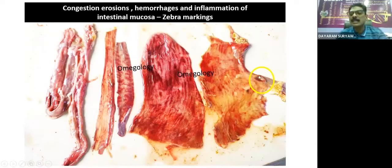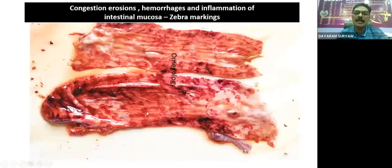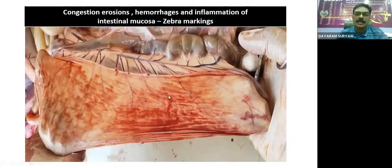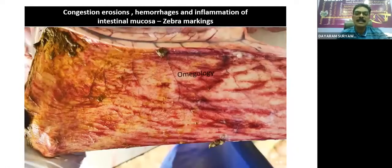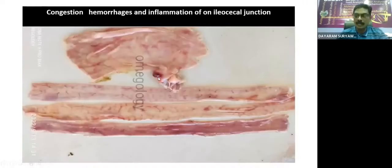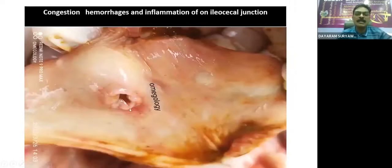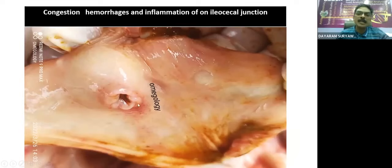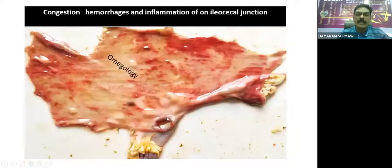The ileocecal junction shows hemorrhage and necrosis. We can see different lesions present in the ileocecal junction — sometimes edema of the ileocecal junction, congestion, and sloughing of the mucosa. There is necrosis and inflammation of the ileocecal junction, and hemorrhages can be seen here as well.